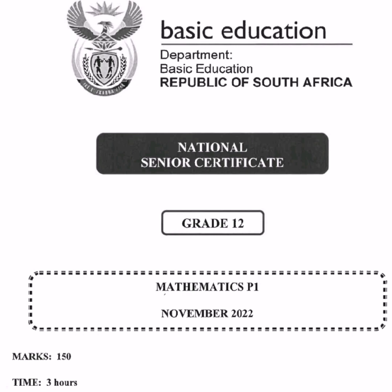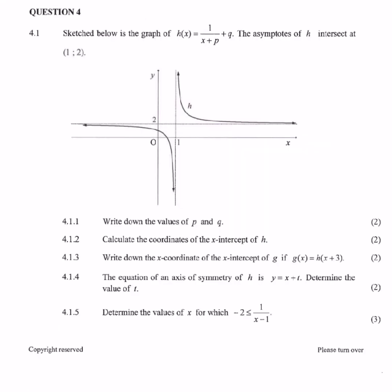We're going to do a revision of Mathematics Paper 1, November examinations. This question is from the 2022 November Paper 1 Mathematics National Senior Certificate final examinations. Question 4.1 covers functions and graphs. The sketch below shows the graph of h(x) = 1/(x+p) + q. The asymptotes of h intersect at (1, 2). Let's check the graph — it is a hyperbola.